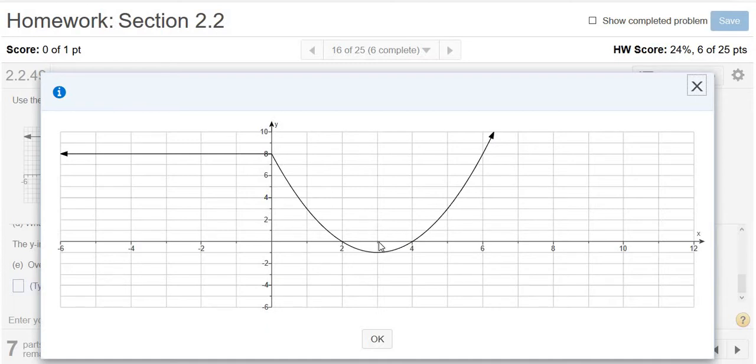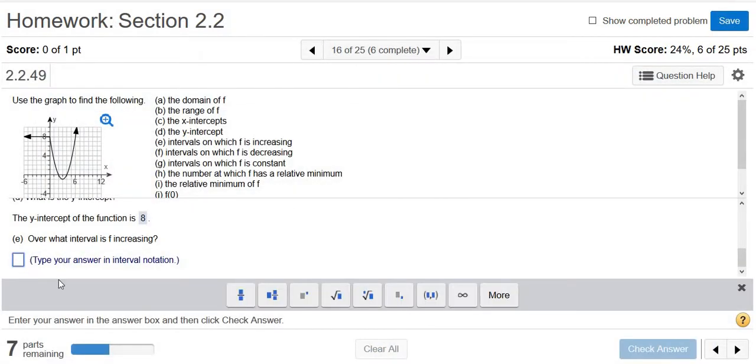Notice all of the answers I said were in x-values. We always describe what's happening to a function in x-values. So from 3 to infinity, the y-values are getting bigger or increasing. So it would be 3 to infinity. As a general rule, we always use parentheses for increasing and decreasing, no matter what.